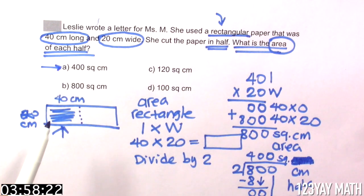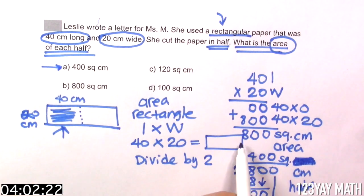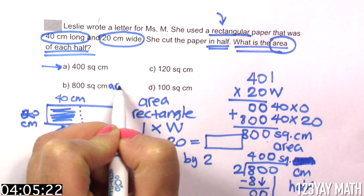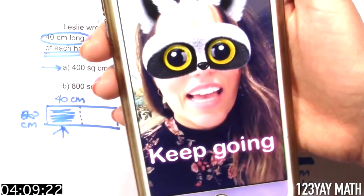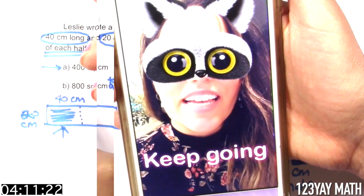B. 800 square centimeters. What is this? Oh, I see an 800 here. So this is the total area. Is this the correct answer? That's not it. Keep going. No.